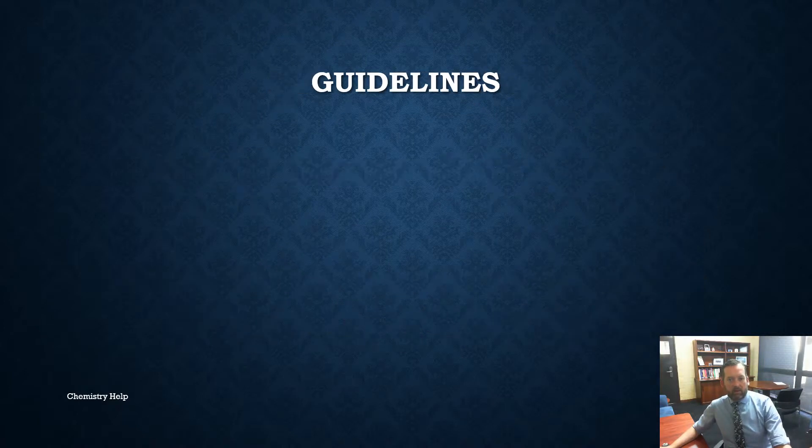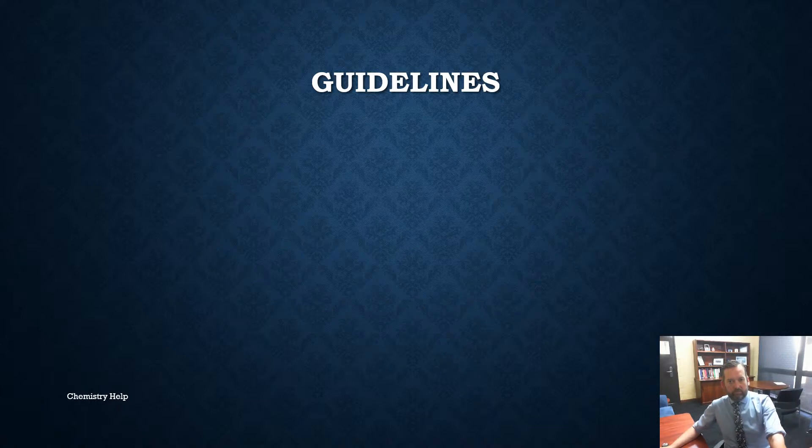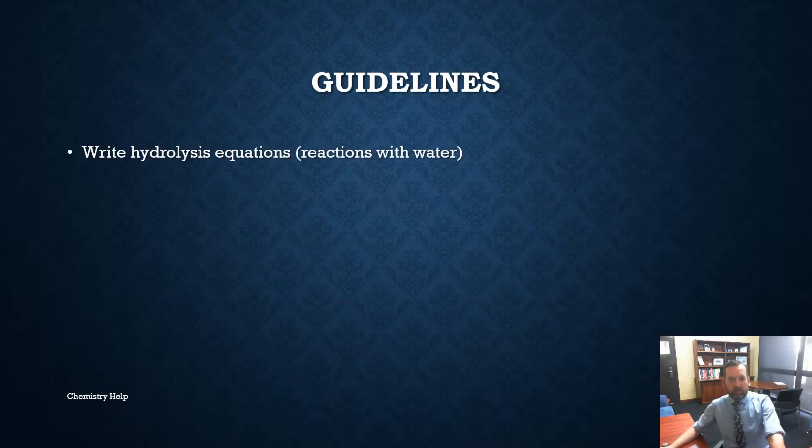So here are some guidelines for the technique I'm going to show you today. First of all, we're going to look at the salt that we produce and then we've got to think about where did the ions that are in the salt come from or what would they turn into if we reverted them back to their original acid and base forms. We need to write hydrolysis equations which essentially is a reaction with water to demonstrate whether something is going to be acid or base.